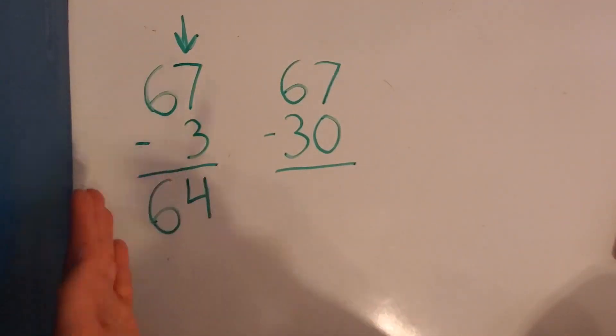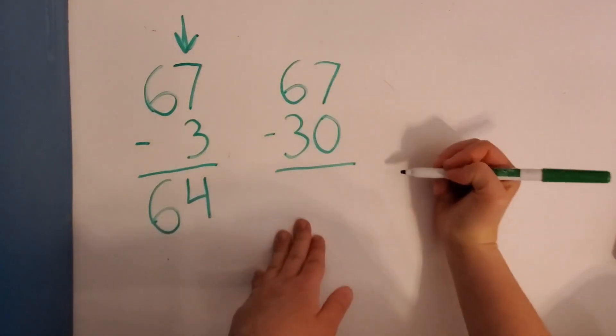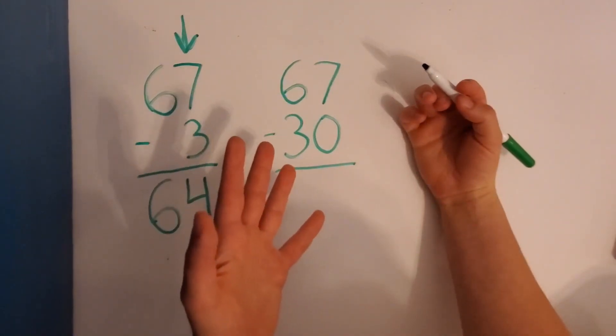You can use the number lines or you can also use this way, which is also helpful. Then we're going to do 67 minus 30. All right? 7 minus 0. What does that equal? 7.